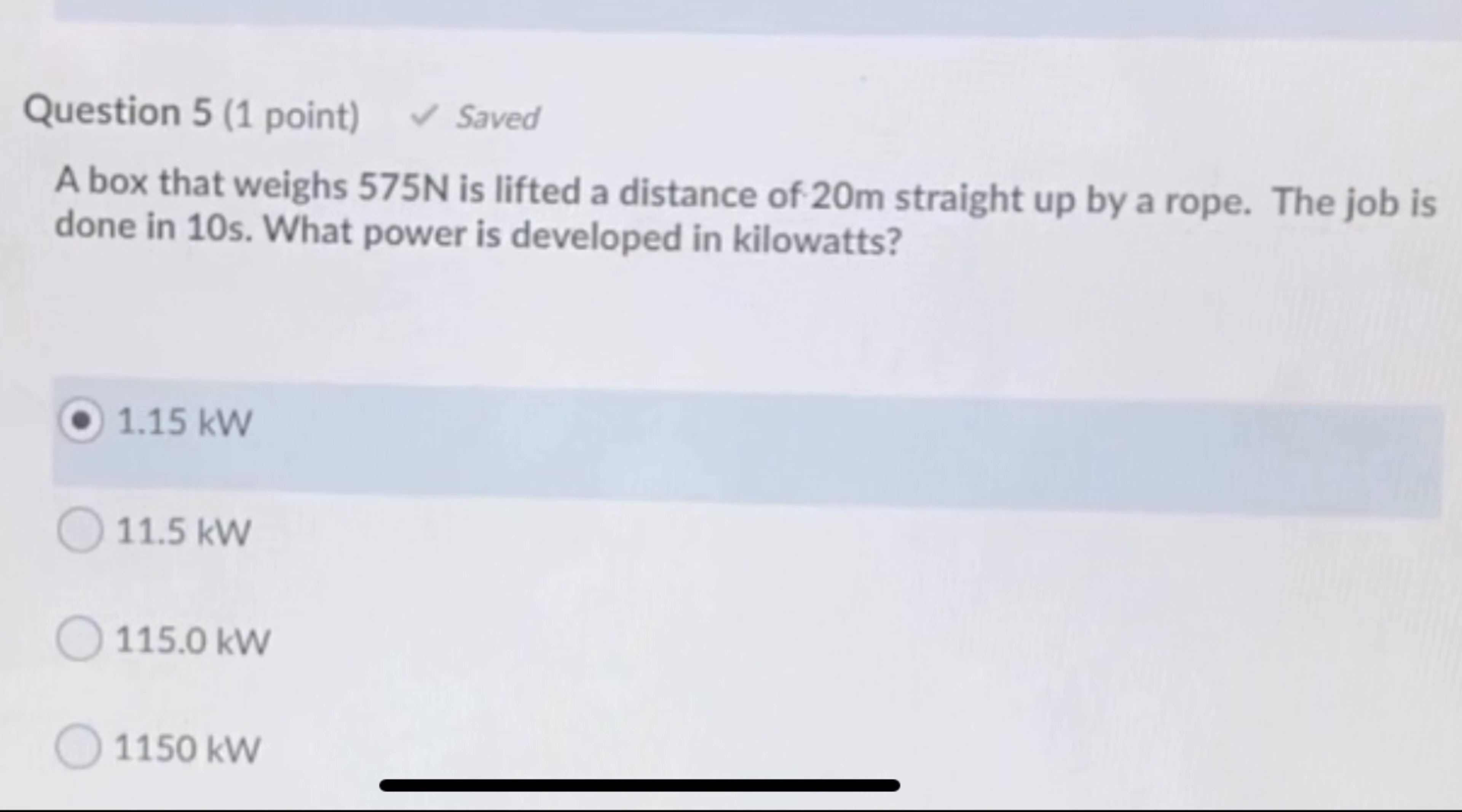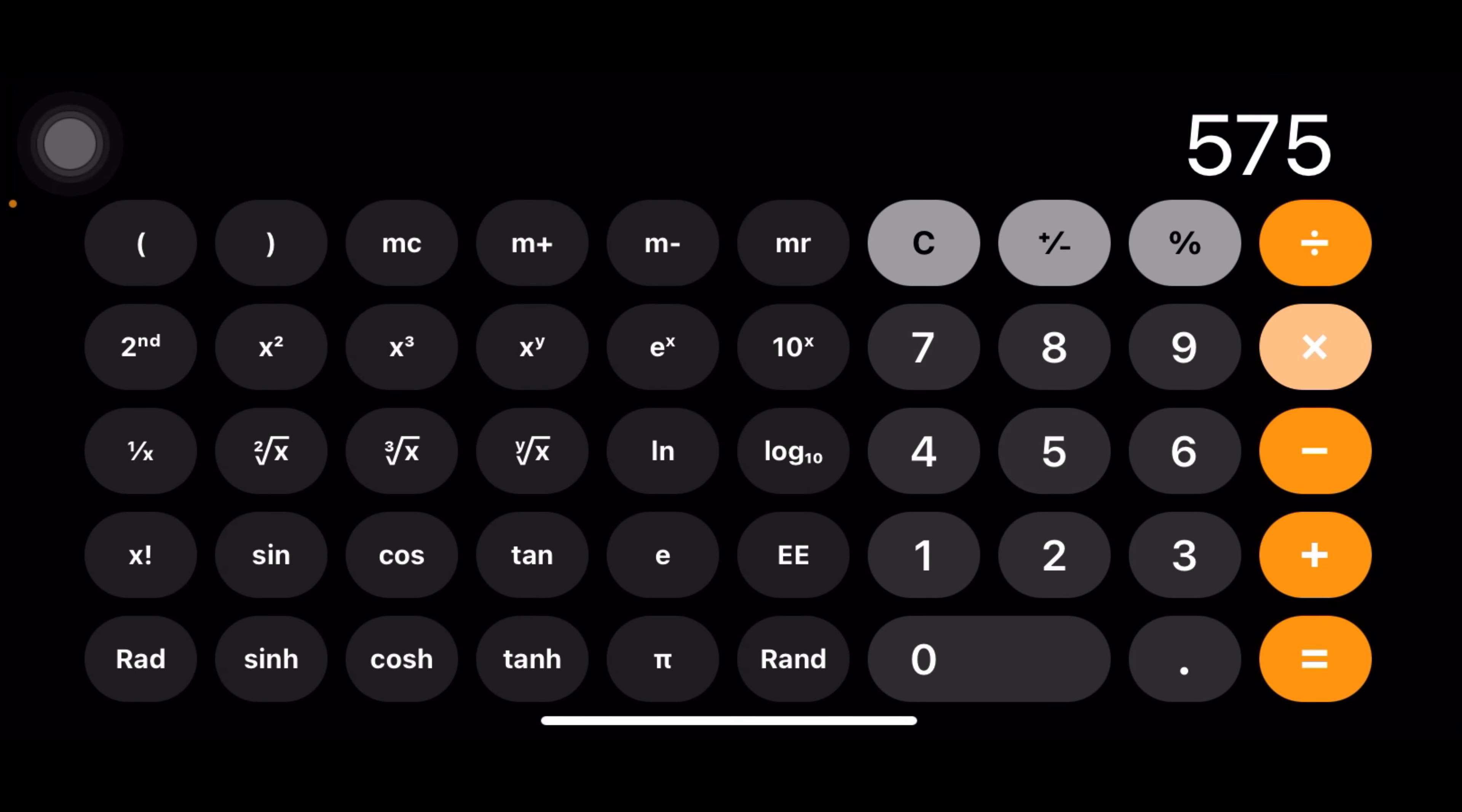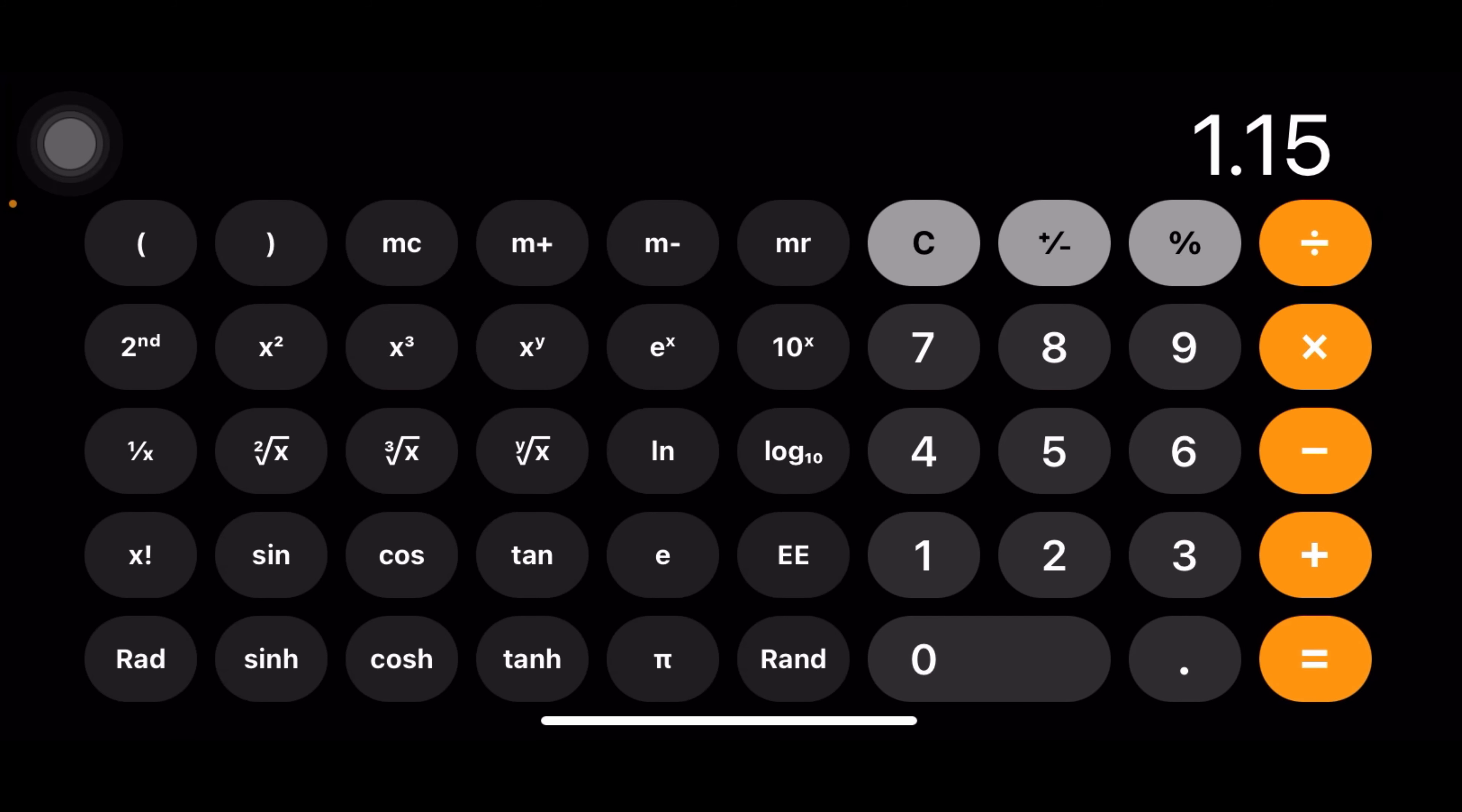A box that weighs 575 newtons is lifted a distance of 20 meters straight up by a rope. The job is done in 10 seconds. What power is developed in kilowatts? This is the one that I missed because I didn't read the part where it asked for kilowatts. We know it weighs 575 newtons, so that's your force. Then your distance and the time. So you do 575 times 20 and then divide that by 10 seconds, so you get 1150. They're asking for kilowatts but that's in watts, so you divide that by 1000 and you get 1.15.